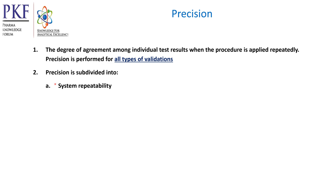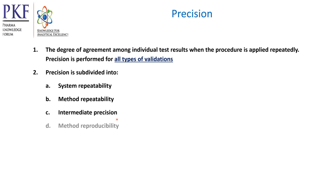Precision is subdivided into system repeatability, method repeatability, intermediate precision, and method reproducibility.